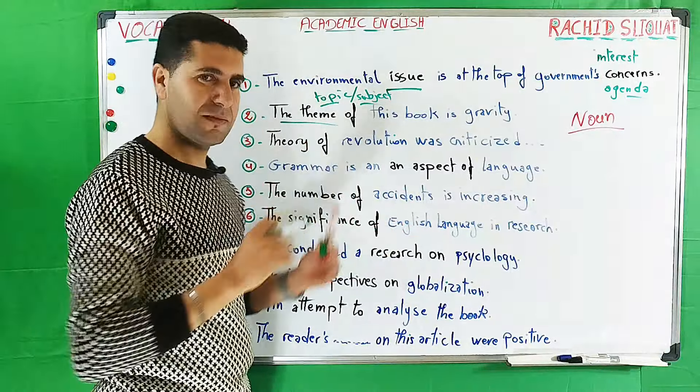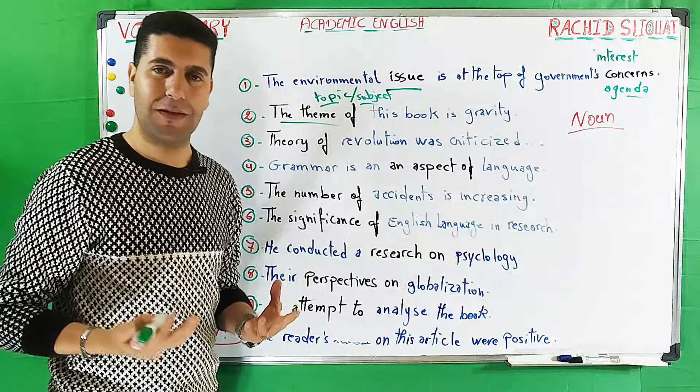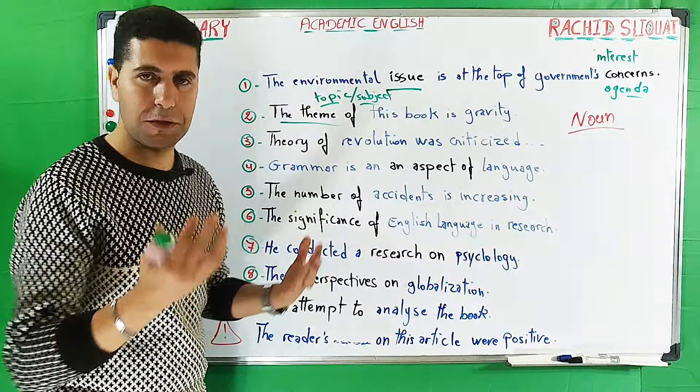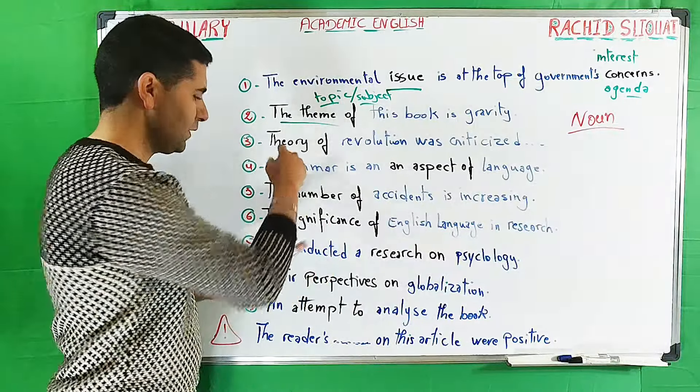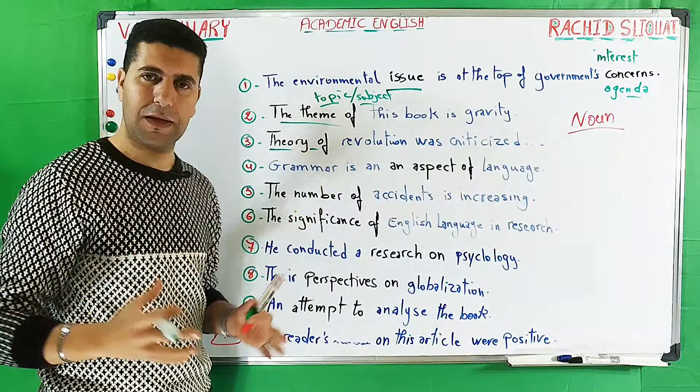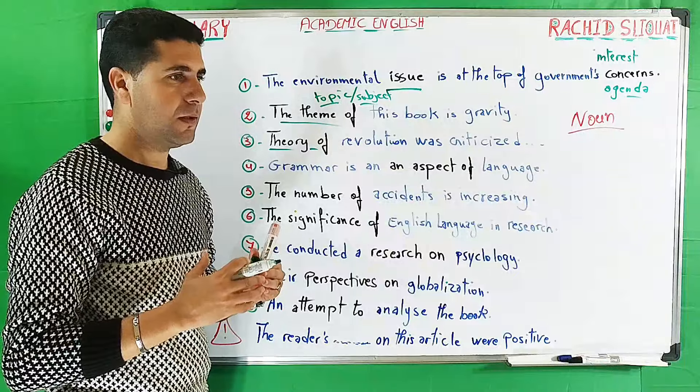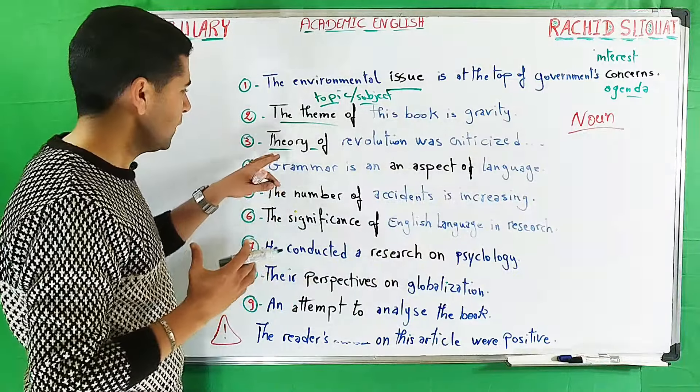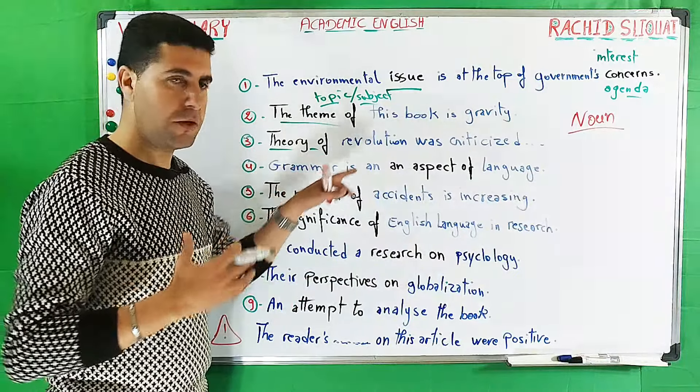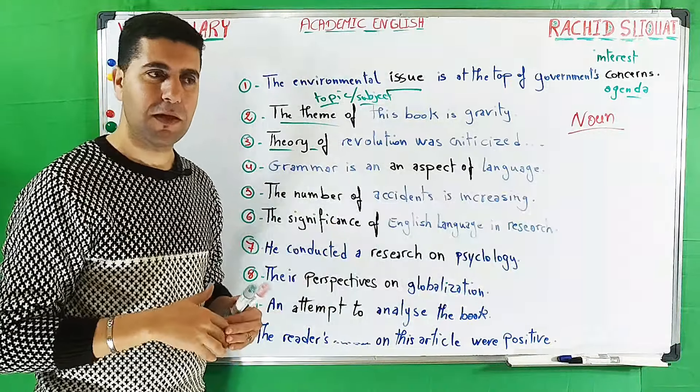Number three: 'The theory of revolution was criticized.' Every theory can be criticized. When I say the theory, it's a kind of rules, a kind of explanation, which most of the time is based on research and experiment. We can have theories in language, science, literature, and so on.